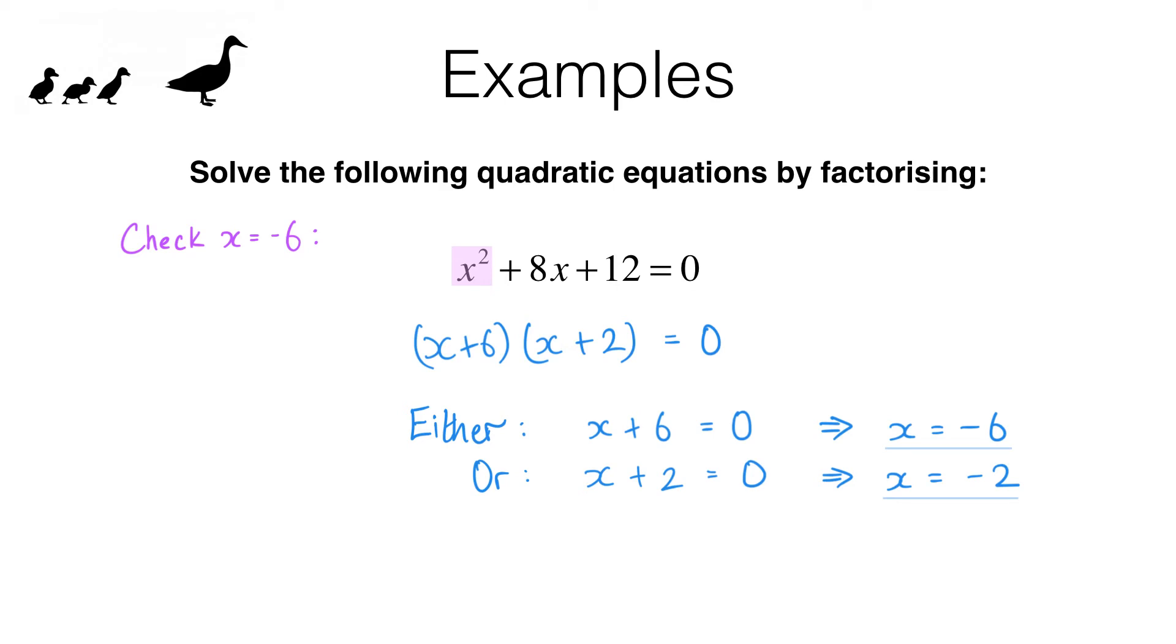8x is 8 times negative 6, which is negative 48. So we have positive 36 plus negative 48 plus 12 and that does equal zero. So x equals negative 6 does satisfy that equation, which means it is a solution. You can check for yourself that x equals negative 2 also satisfies this equation.